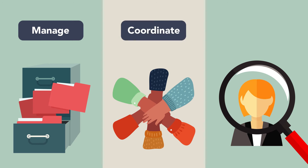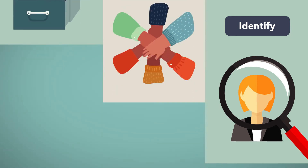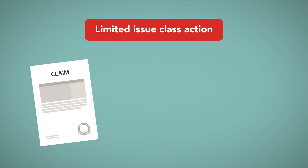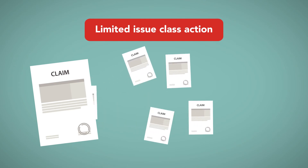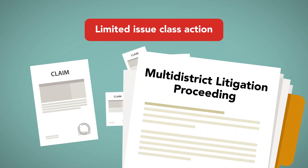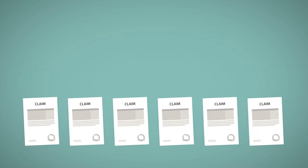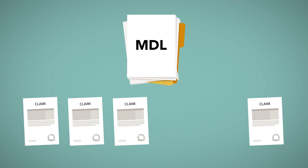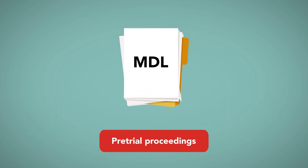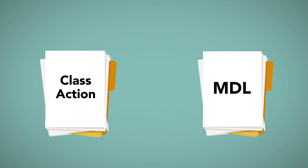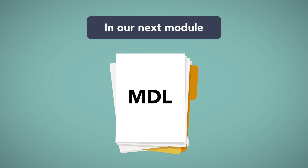That means a procedure other than a class action must be used to manage these mass tort cases before they reach the point of becoming a class. For settlement classes to work, there must be some way to manage the mass tort claims that thousands of different people file in the period before the class can be certified. There also must be some way to coordinate cases during discovery and to identify some lead group of plaintiff's lawyers who can negotiate the settlement that is the reason the class is certified. Similarly, in a limited issue class action, if some common issues are handled through class procedures, there must be some way to manage the remainder of the issues that must be handled individually. That procedure is a multi-district litigation proceeding. Nearly all mass tort cases handled in federal courts are brought as individual claims and then consolidated for pretrial proceedings in an MDL proceeding, and we will turn next to MDL proceedings and how they work.